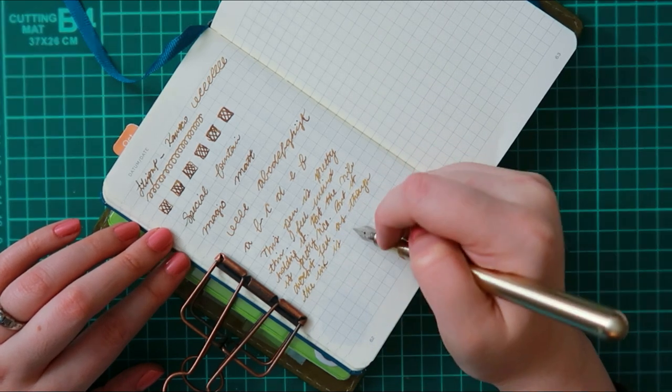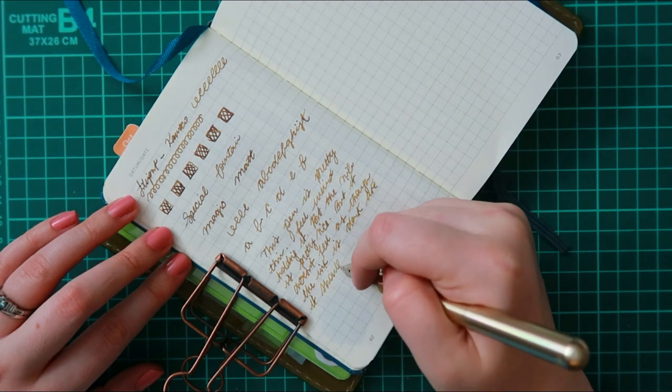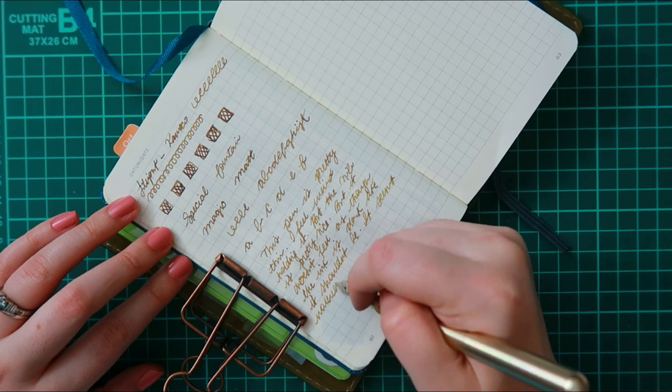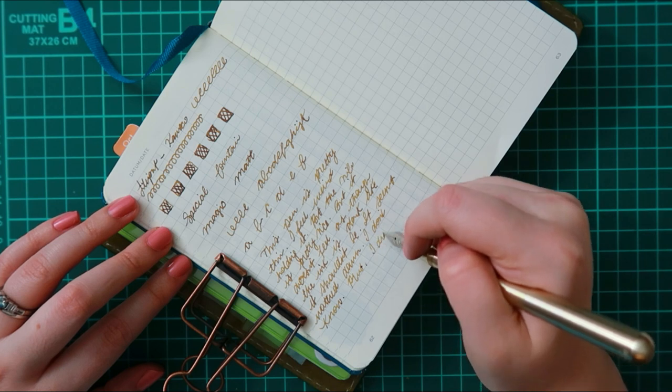I don't feel as though this pen shows off this ink very nicely. I'm using Diamine Tobacco Sunburst, and I just feel as though this nib just doesn't show it off as nicely as it looks like in a flex nib.